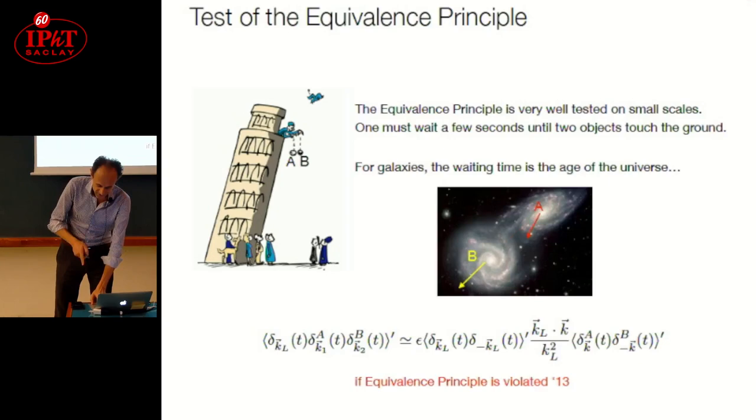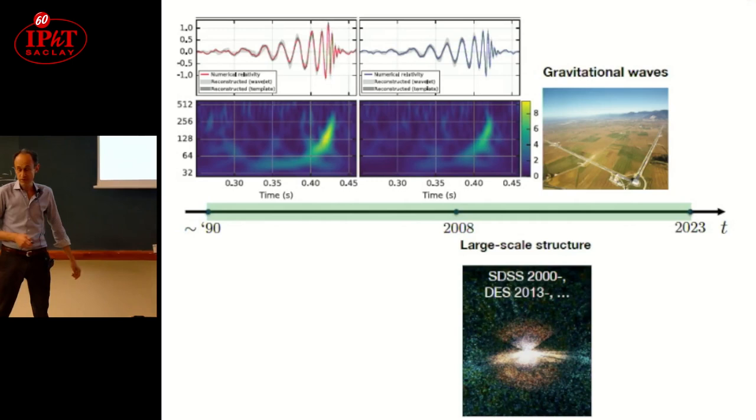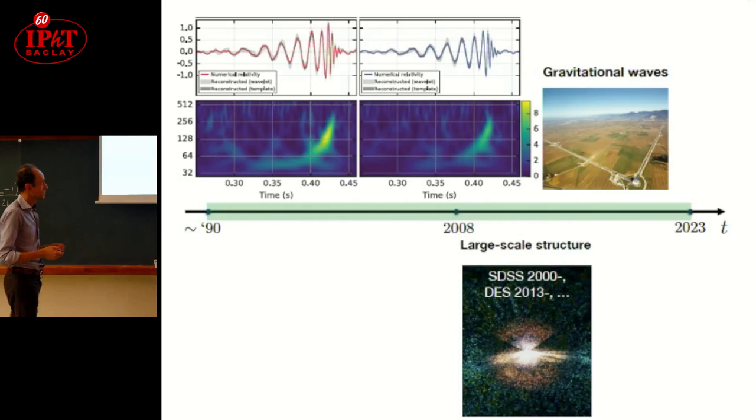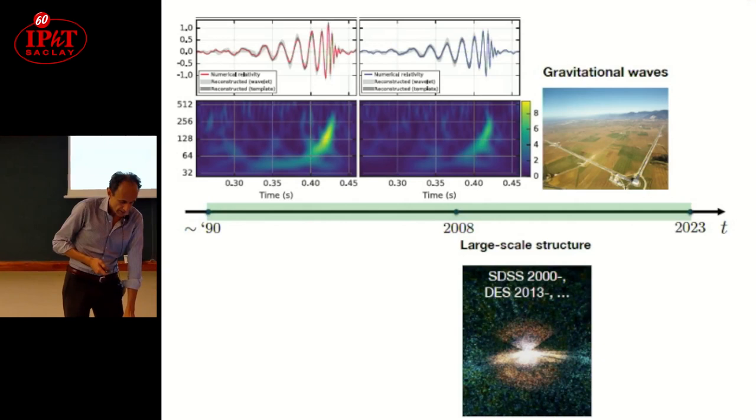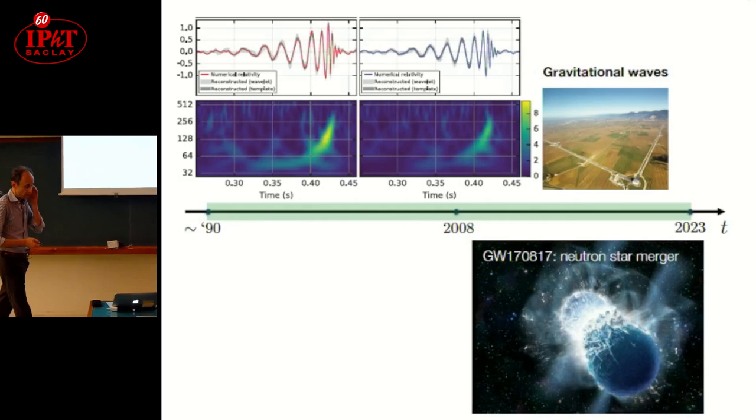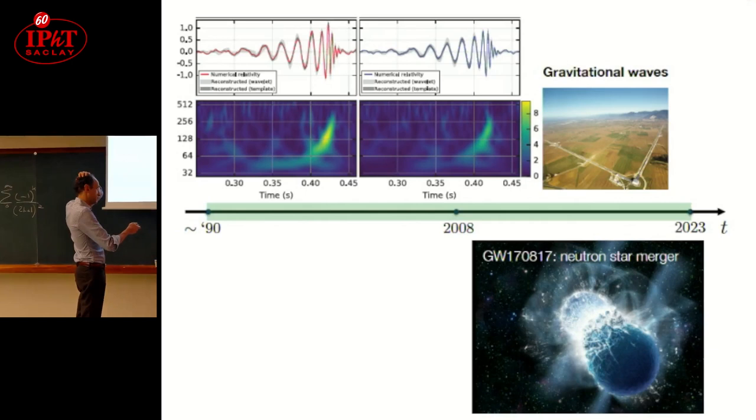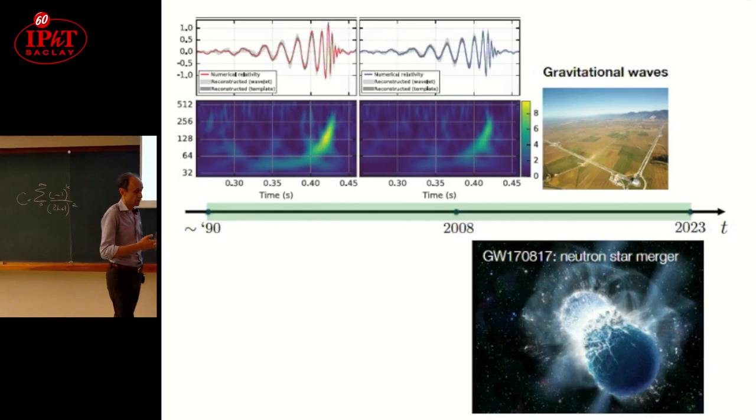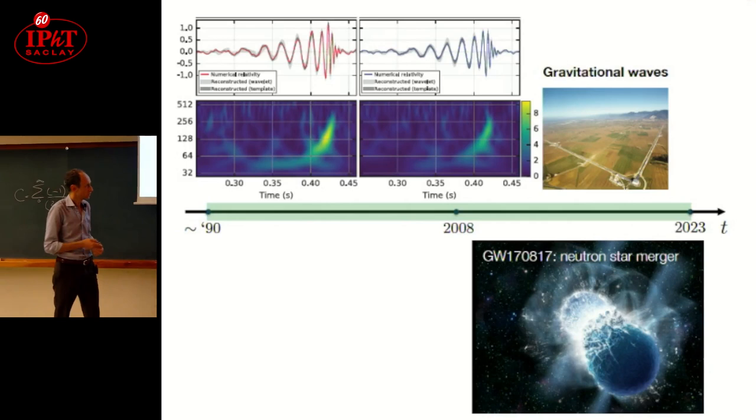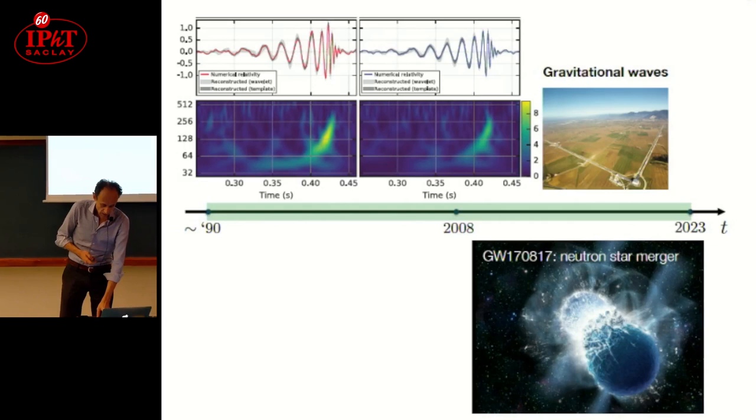Let me go to finally a new observable that became recently very important, which are gravitational waves. There was a breakthrough, as you all know, in 2015, with the first observations. This became very important for cosmology. In particular, this observation was very important: the merger of two neutron stars and the emission from this simultaneously of light, gamma rays, and gravitational waves.